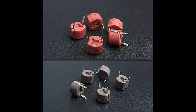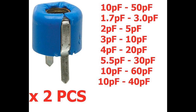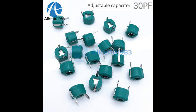Trimmer capacitors typically exhibit very low capacitance leakage, which is critical in maintaining signal integrity, especially in high-frequency and high-precision applications. They are found in many applications including RF circuits, oscillators, filters, impedance matching networks, and communication devices, and are available in various capacitance ranges, voltage ratings, and sizes. In summary, trimmer capacitors offer adjustable capacitance, compact size, high stability, and low power loss, making them essential for fine-tuning and calibration in a wide range of electronic circuits, particularly in high-frequency and precision applications.